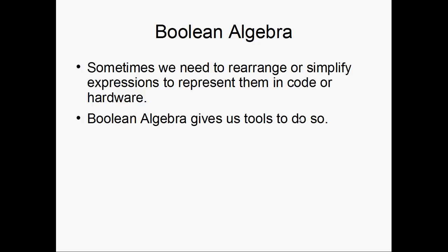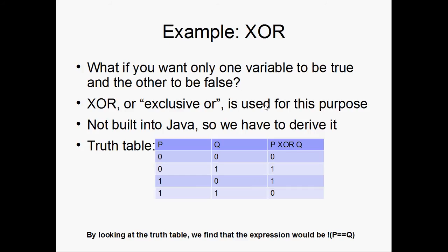So sometimes we need to rearrange things or simplify expressions in order to code them easier or design them into hardware easier. Boolean Algebra gives us tools to do that. For example, if you wanted to find if only one variable is true and the other is false, we would use an exclusive OR. If you're designing a digital circuit, then you would have an XOR chip available to you, but there isn't anything like this built into Java or most programming languages. So you have to figure it out yourself.